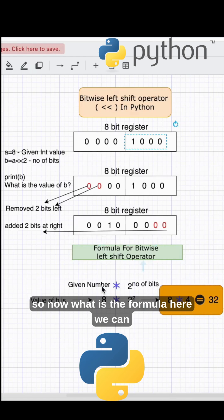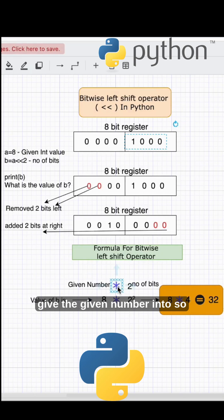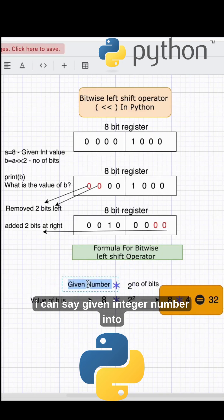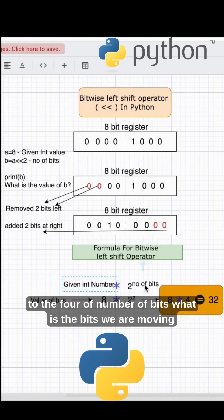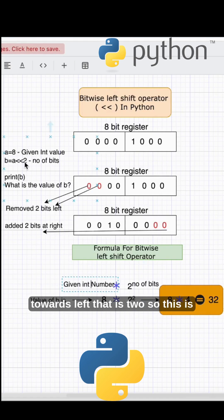Now what is the formula here? We can give the given number - the given integer number times 2 to the power of the number of bits. What are the bits we are moving towards left? That is 2. So this is the value.